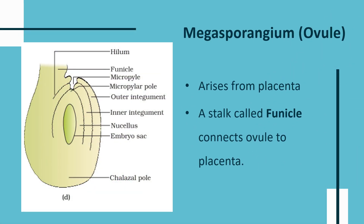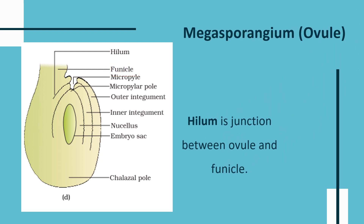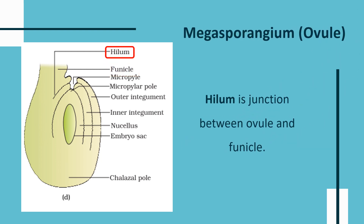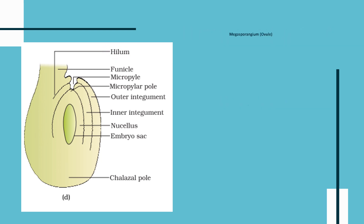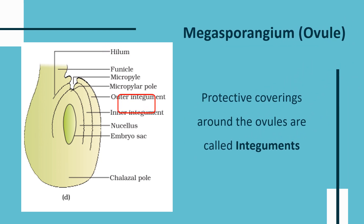The megasporangium or ovule arises from placenta and is connected to it through a stalk-like structure known as funicle. Hilum is the junction between the ovule and funicle. Integuments are the protective coverings around the ovule. Based on the number of coverings present, we have four different types of ovules.